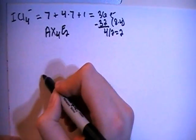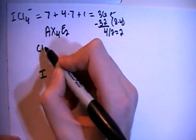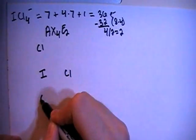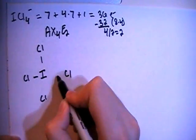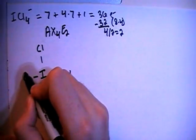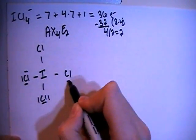So let's go ahead and draw the structure. We have the iodine in the center surrounded by the 4 chlorines. And we can go ahead and single bond all the chlorines to the central iodine and also fill in the octets for each of the peripheral chlorines.